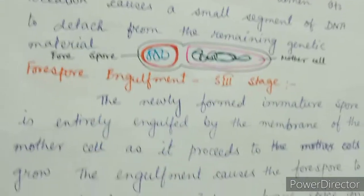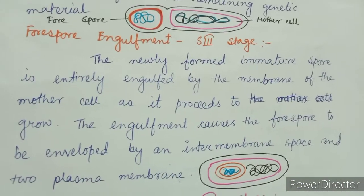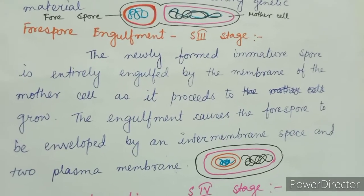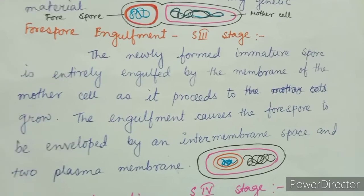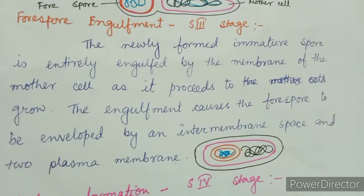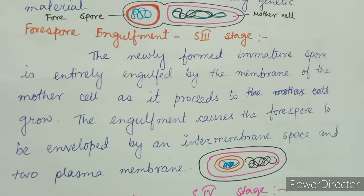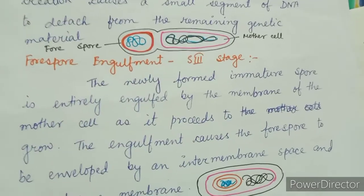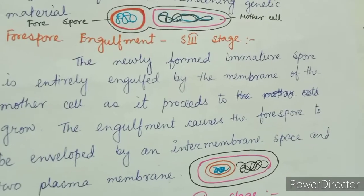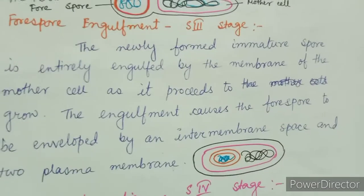The newly formed immature spore is entirely engulfed by the membrane of the mother cell as it proceeds to grow. The engulfment causes the forespore to be enveloped by an intermembrane space and two plasma membranes. The forespore, which was separated from the mother cell, is now engulfed and enters into the mother cell.